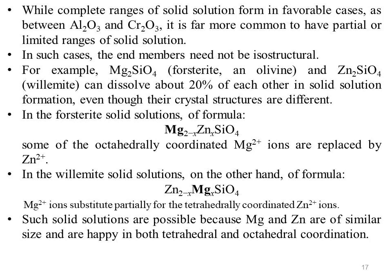In the forsterite solid solution of formula Mg(2-x)ZnxSiO4, some of the octahedrally coordinated magnesium ions are replaced by zinc ions. In the willemite solid solution of formula Zn(2-x)MgxSiO4, magnesium ions substitute partially for the tetrahedrally coordinated zinc ions. Such solid solutions are possible because magnesium and zinc are of similar size and are stable in both tetrahedral and octahedral coordination.